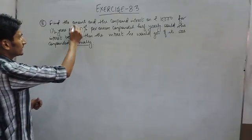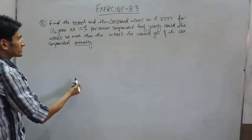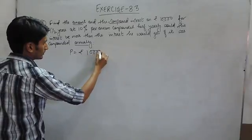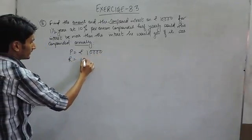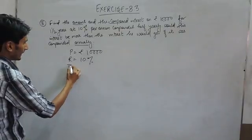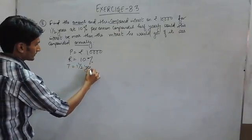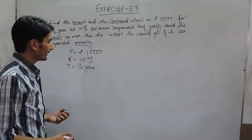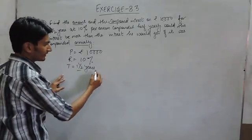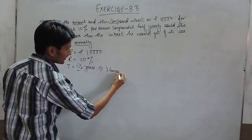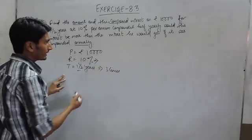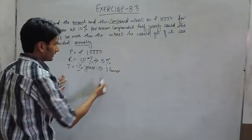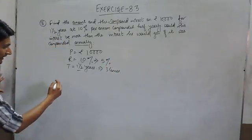So let's find first the amount and the compound interest when the compound interest is payable half yearly. Here the principal is rupees 1000, rate is 10%, and time is 1 and a half years. Interest is payable half yearly, meaning after every 6 months you will be paid interest. So in 1 and a half years, interest will be paid 3 times.